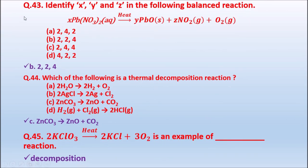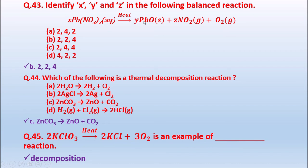Question 43: Identify X, Y, and Z in the balanced reaction: X Pb(NO₃)₂ → Y PbO + Z NO₂ + O₂. Options: A: 2,4,2; B: 2,2,4; C: 2,4,4; D: 4,2,2. The correct answer is B: 2,2,4 — that means 2Pb(NO₃)₂ → 2PbO + 4NO₂ + O₂, which is the balanced reaction.